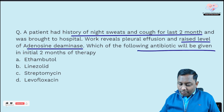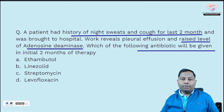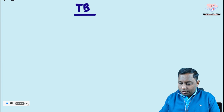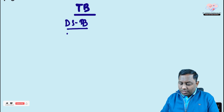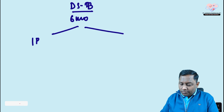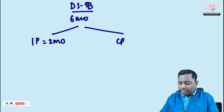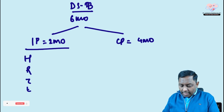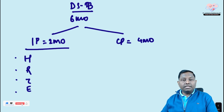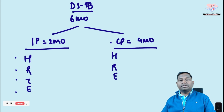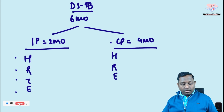What antibiotic will be given in the initial two months of therapy? In tuberculosis, for drug-sensitive TB, we have a six-month therapy: an intensive phase for two months and a continuation phase for four months. In the intensive phase we use HRZE — isoniazid, rifampicin, pyrazinamide, and ethambutol. In the continuation phase we use HRE — isoniazid, rifampicin, and ethambutol.